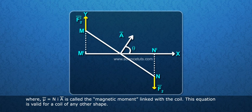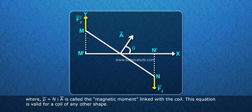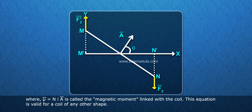Where mu bar equals to NI A bar is called the magnetic moment linked with the coil. This equation is valid for a coil of any other shape.